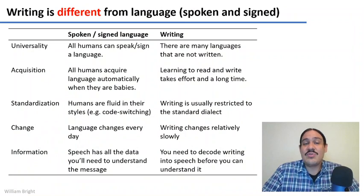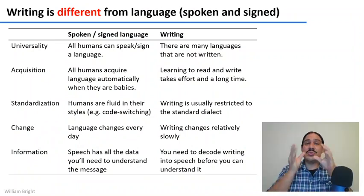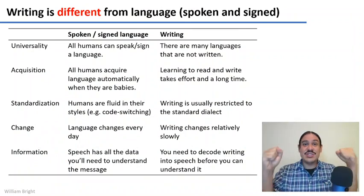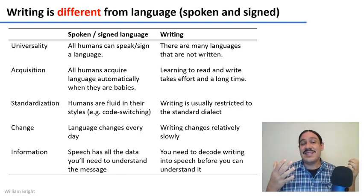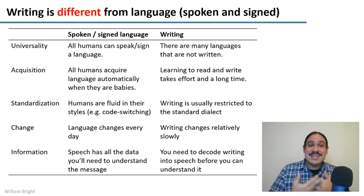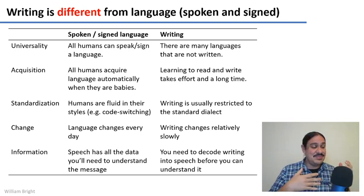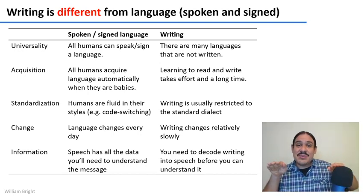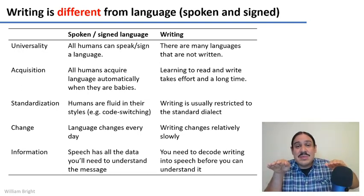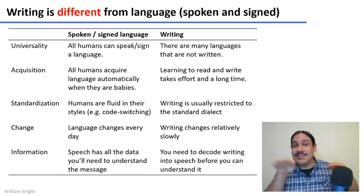First of all, writing and language are two different things. They differ regarding universality: all humans can speak a language, whereas there are many languages that don't have a writing system, and yet people can use these languages to communicate any thought they need.